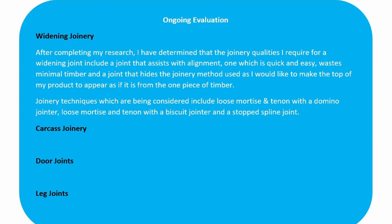Please take note that these headings are in bold black text. The following statement could be used for a widening joint: 'After the completion of my research, I've determined that the joinery qualities I require for a widening joint include a joint that assists with alignment, one that is quick and easy, that wastes minimal timber, and hides the joinery method used, as I would like to make the top of my product appear as if it is made from one piece of timber.' Joinery techniques being considered include loose mortise and tenon with a domino jointer, loose mortise and tenon with a biscuit joiner, and a stopped spline joint.